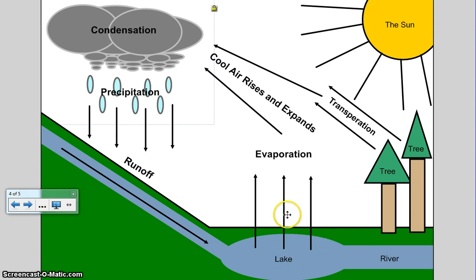Evaporation then occurs where the water vapor rises and then it cools down and expands and rises some more. When that cool air rises and expands, it forms clouds in a process known as condensation.